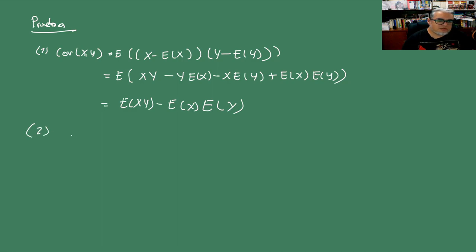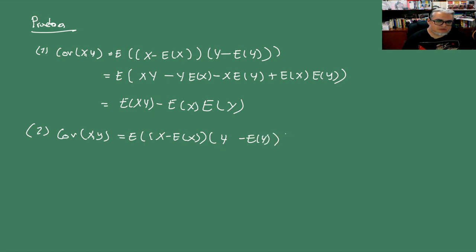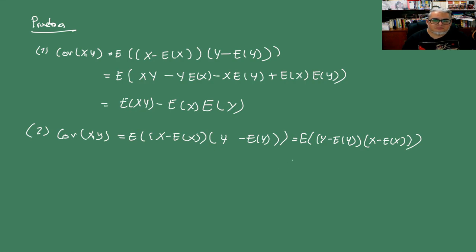Propiedad 2 (simetría): Cov(X,Y) = E[(X − E[X])(Y − E[Y])]. Como el producto es simétrico, esto es lo mismo que E[(Y − E[Y])(X − E[X])], que es Cov(Y,X).